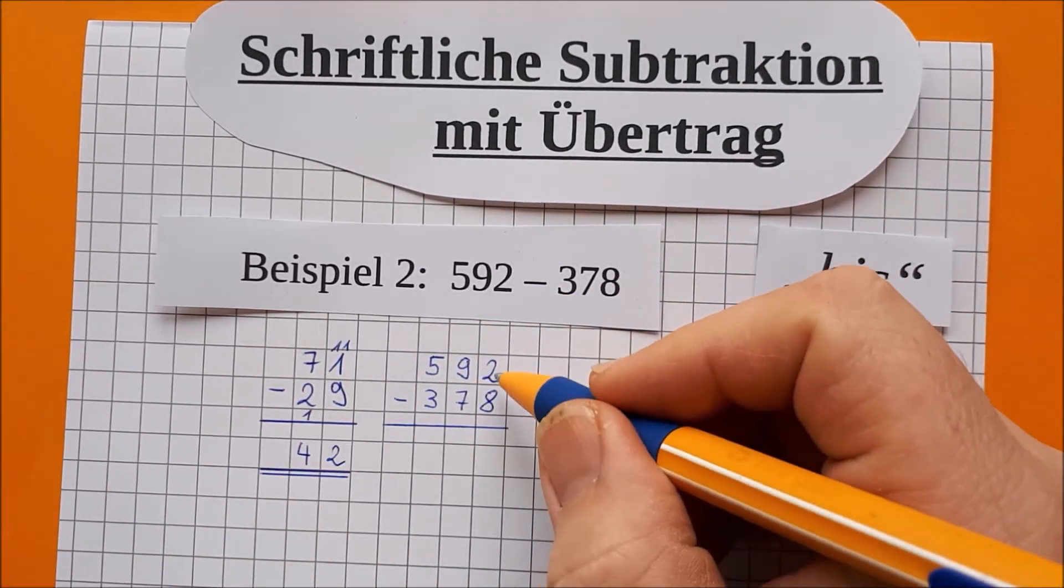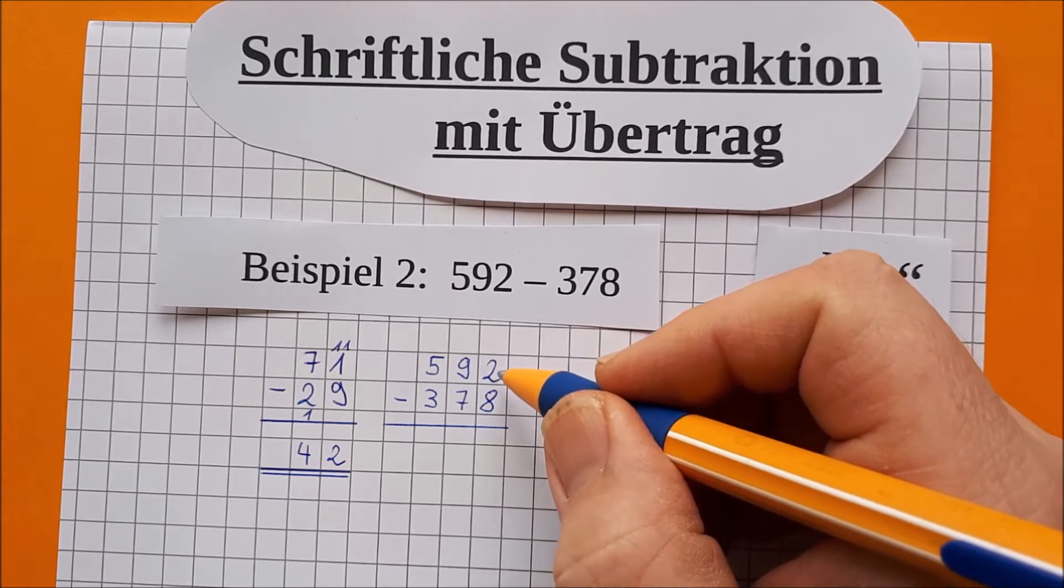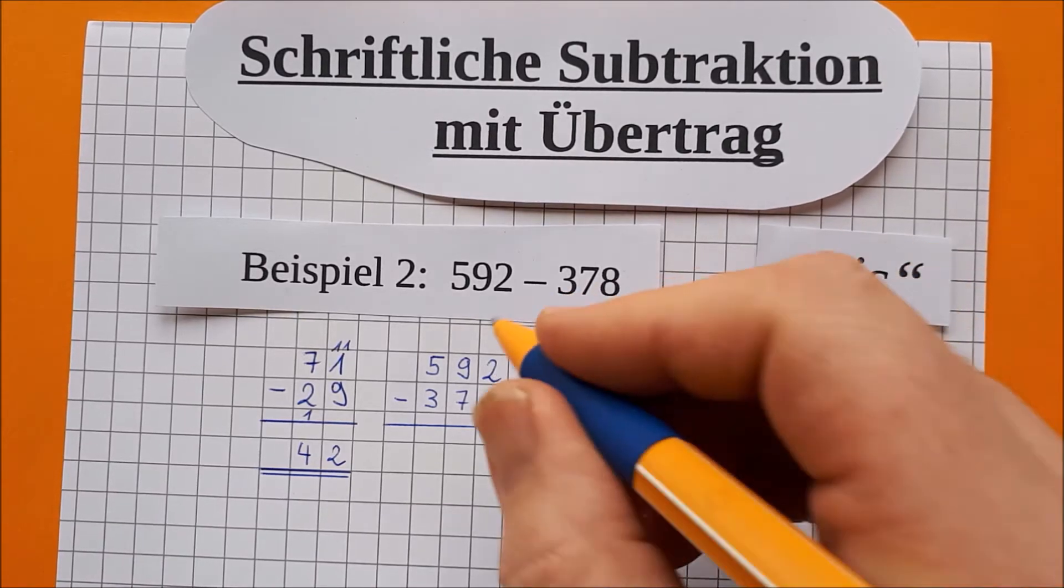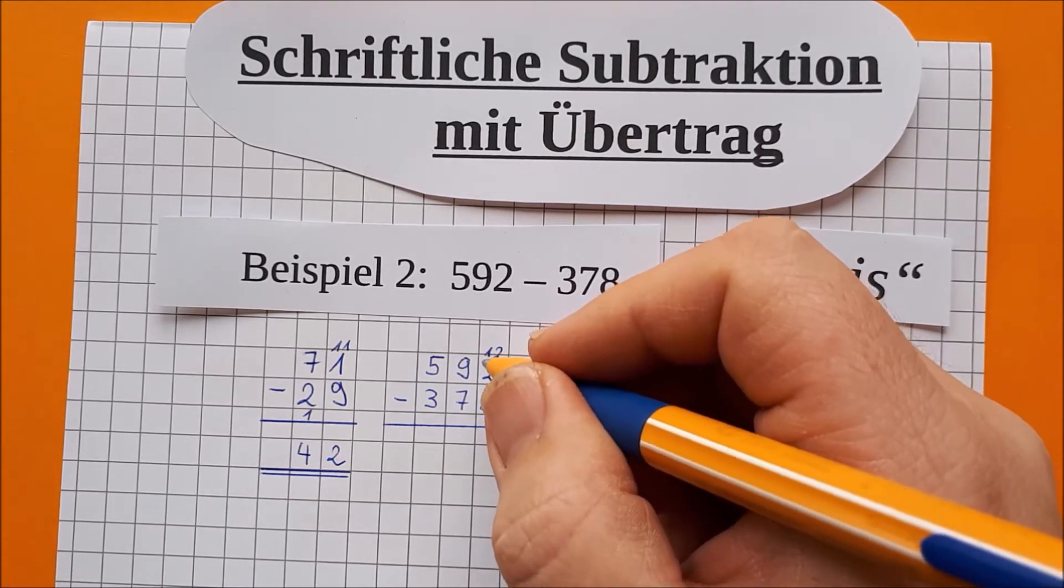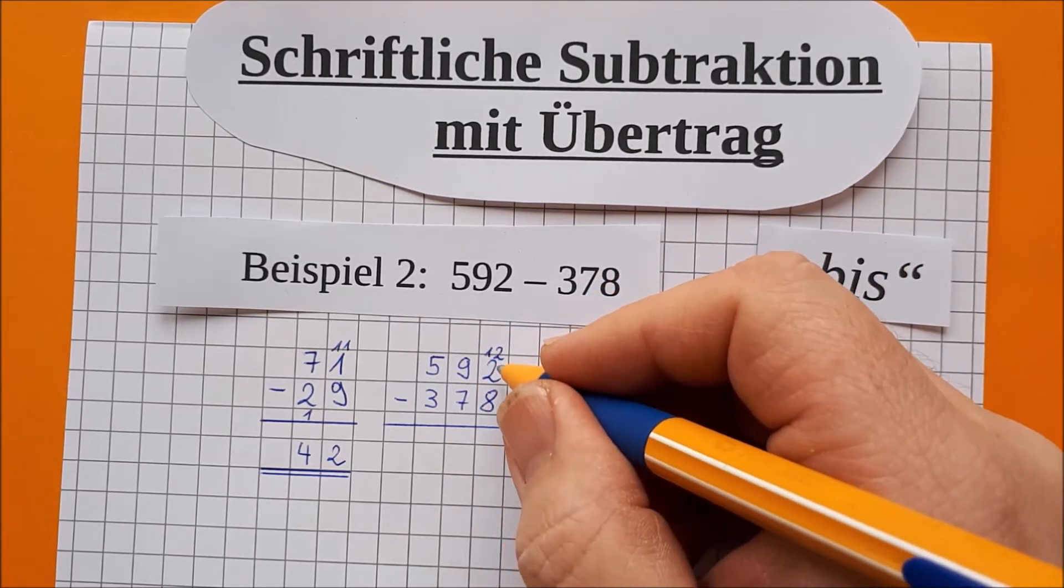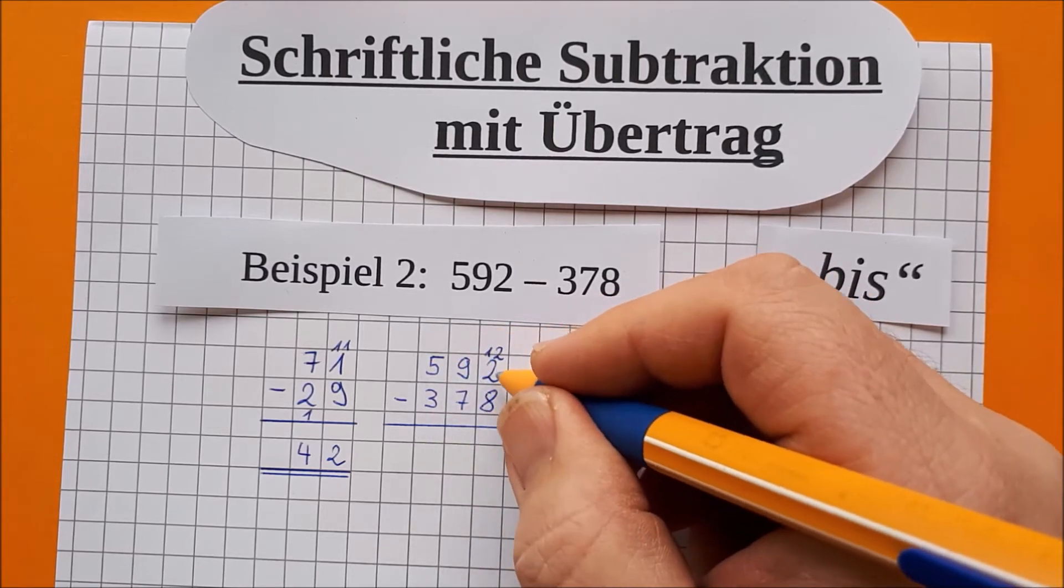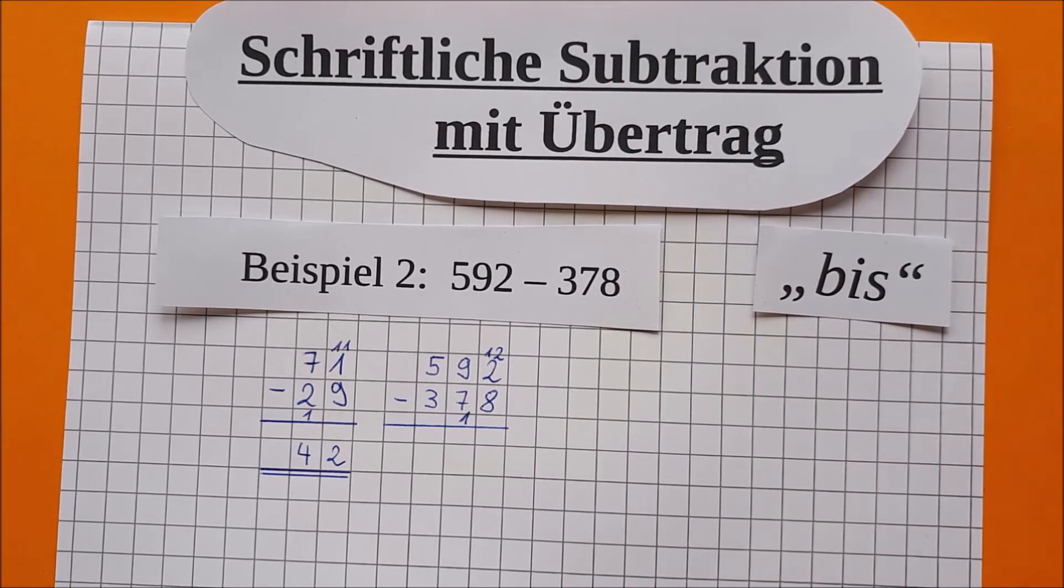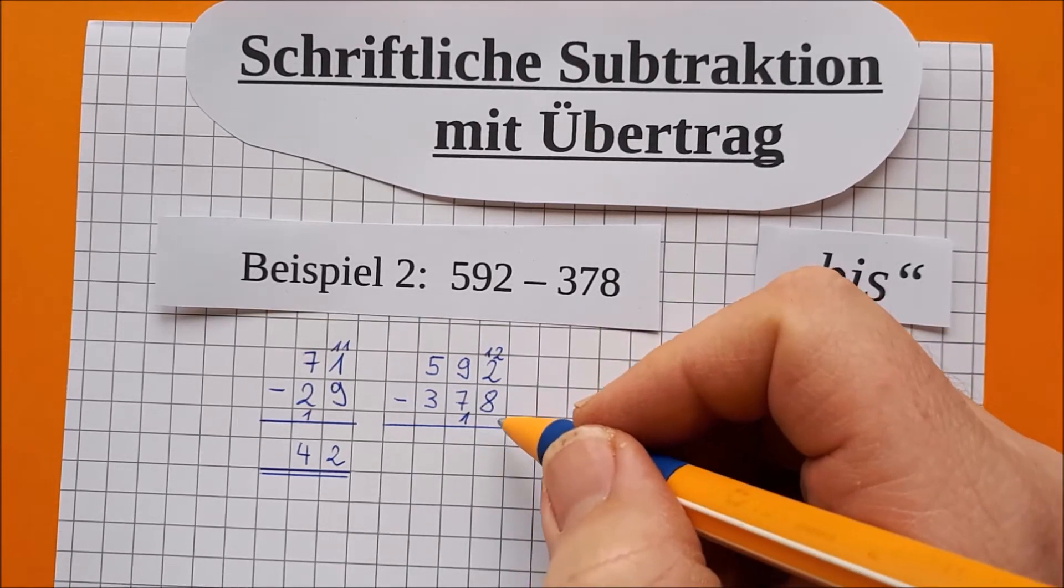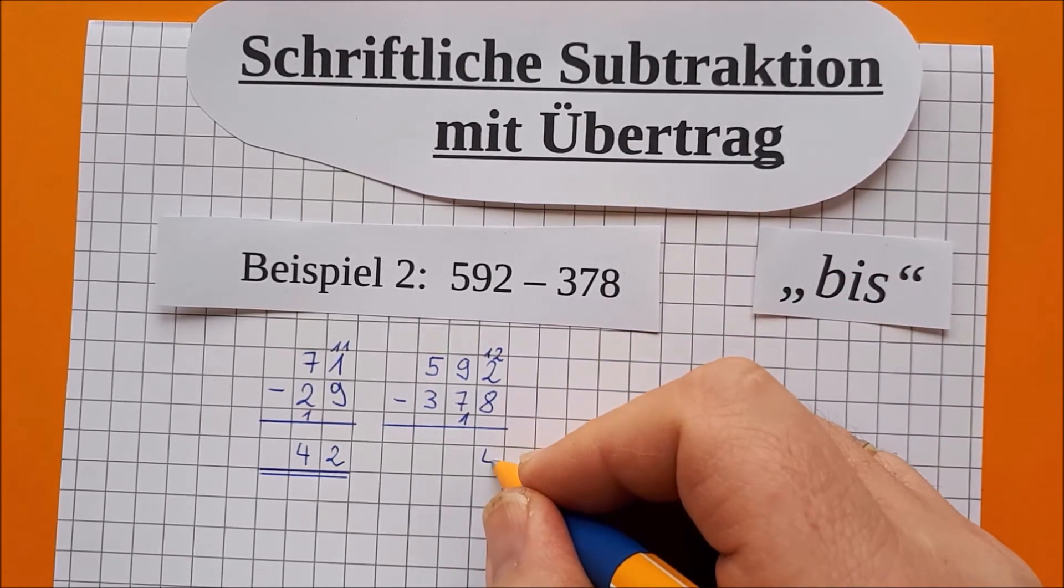Jetzt haben wir wieder das Problem. 8 bis 2 geht nicht. So ein Mist. Also machen wir daraus eine 12. Die schreiben wir nicht immer mit. Das ist das letzte Mal, dass ich die mitschreibe. Danach denken wir sie uns nur noch. Also 8 bis 12. Und wenn ich hier oben 10 dazu tue, muss ich hier unten auch 10 dazu tun. Damit das Ergebnis gleich bleibt, wie bei den Schokoküssen. Also 8 bis 12 ist das Gleiche wie 4.